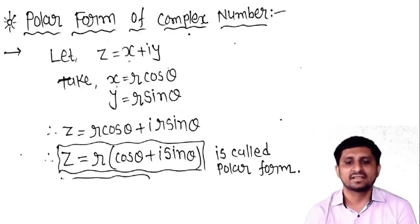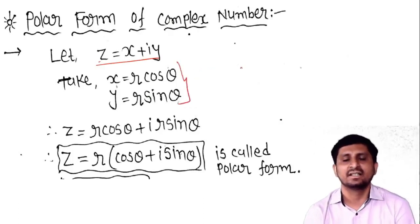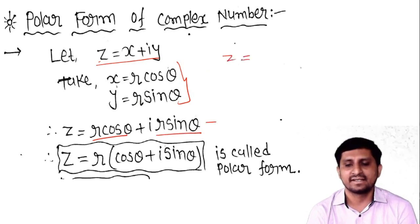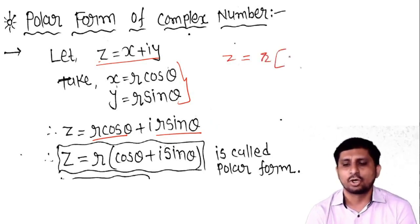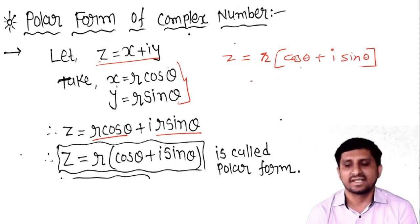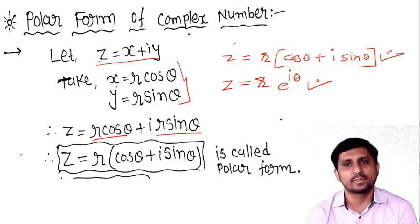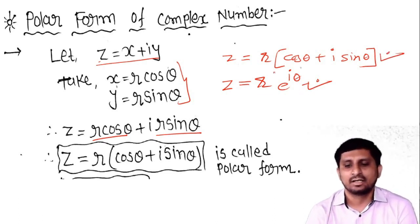Now, the polar form of a complex number: if z = x + iy, then we use x = r cos θ and y = r sin θ. Substituting these values, we get z = r cos θ + ir sin θ, and taking r common, z = r(cos θ + i sin θ). This is exactly the polar form for the complex number.